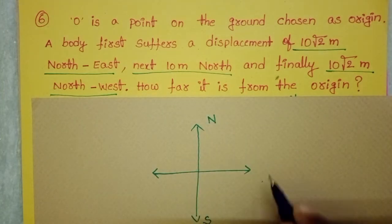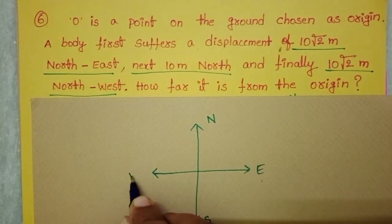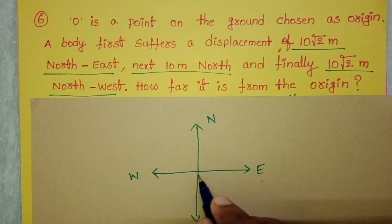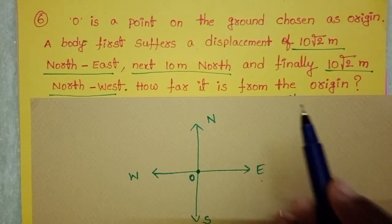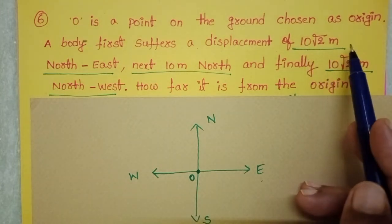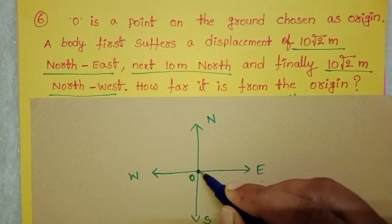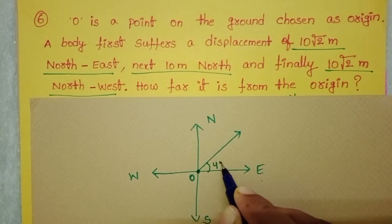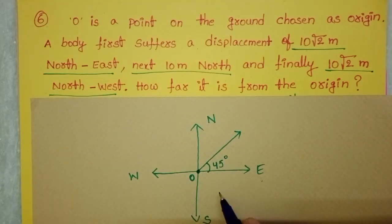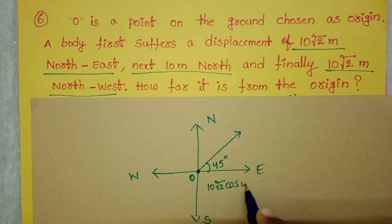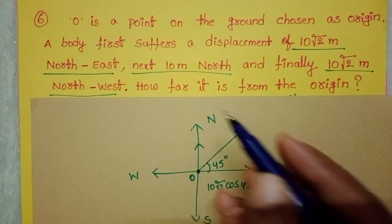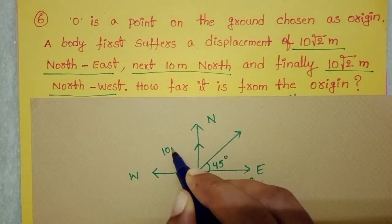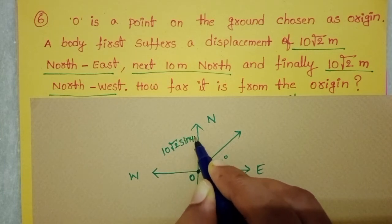We mark the north, south, east, and west directions. Initially the particle is at origin O, and then it suffers a displacement of 10√2 meters in the north east direction. North east direction means it makes an angle of 45 degrees. So along the east direction the component is 10√2 cos45°, and along the north side 10√2 sin45°.